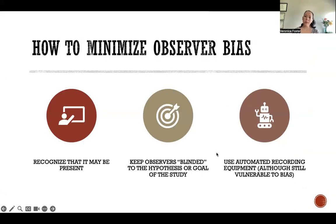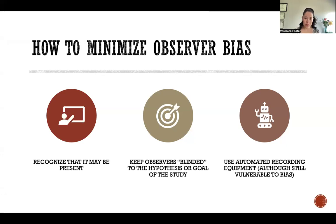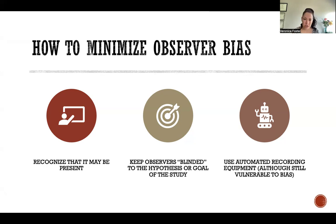So how do we minimize observer bias? The most important part is that we recognize that observer bias could be present. Observer bias is always possible when we're doing any kind of research that involves any type of observation, so we need to always recognize that it can be present so that we can try to be as unbiased as we possibly can. We want to work against our biases and question all of our expectations and assumptions about whatever it is that we are observing.